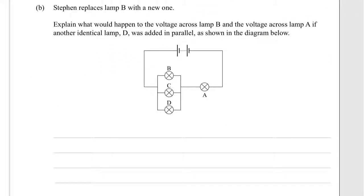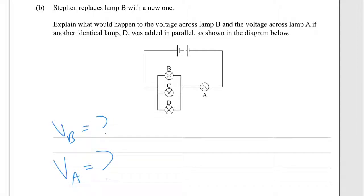Stephen replaces Lamp B with a new one. Explain what would happen to the voltage across Lamp B and the voltage across Lamp A if another identical Lamp D was added in parallel as shown in the diagram below. So we're starting from the same position with B, C, and A — then we add D — and we need to find VB and VA.